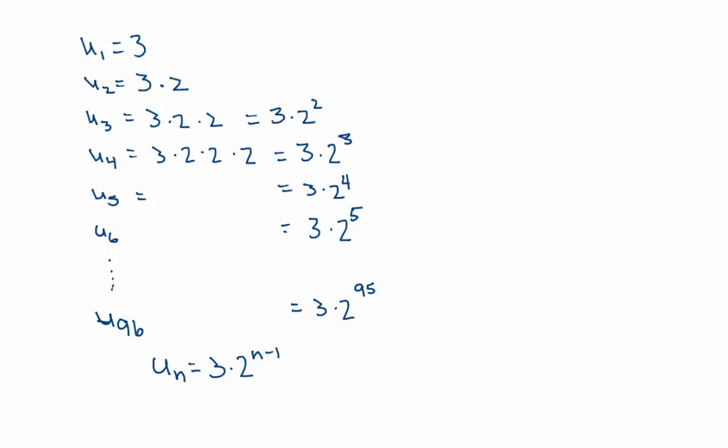To generalize for all geometric sequences, what I could say then is my general term, U sub n, is going to equal, well, 3 is my first term, so I'll call that, generally speaking, U1. 2 is my common ratio, so I'll multiply it by R, and it's to the n minus 1.